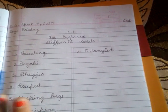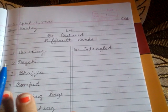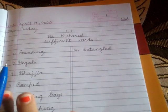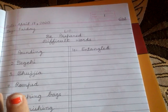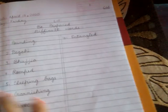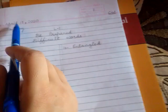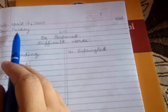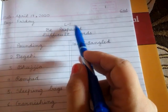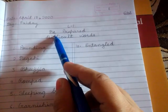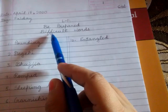Whenever I tell you to send your work to the checking group, then you can send it, otherwise not. I will tell you how many students of this section will upload their notebook. Firstly, mention the date and day — all of you know about it. Mention classwork, write down page number one, and firstly write the name of the chapter: 'Be Prepared.'